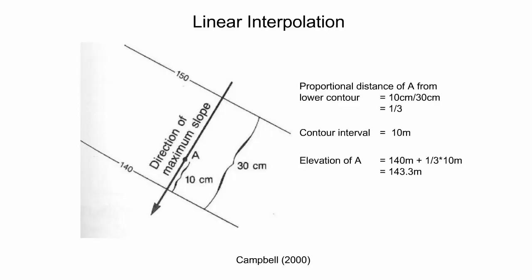In this example, point A lies 10 centimeters horizontally from the lowest contour elevation, which is 140 meters. There is a horizontal separation of 30 centimeters between the two contours. Thus, the proportional distance from A to the lowest elevation contour is one-third. Multiplying one-third by the contour interval of 10 meters gives an elevation difference of 3.3 meters. Adding 3.3 meters to the lowest contour elevation means that point A has an approximate elevation of 143.3 meters.